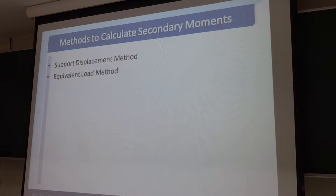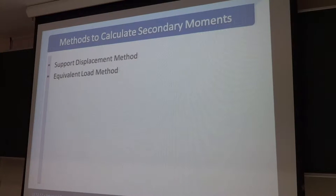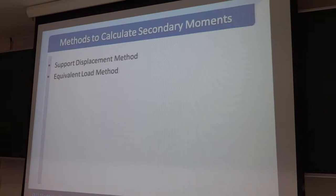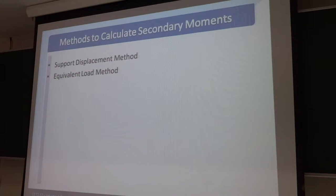When we do the prestressed concrete design, first we normally do the load balancing to reduce the deflection of the panels. For prestressed beams or post-tension slabs, we normally balance the dead load, maybe 70–80% of the dead load. So the deflection will be zero, compared to normal RC structures where the slabs or beams will deflect. We use prestressed concrete in long-span structures. After we balance the load, the deflection will be zero for 70–80% of the dead load.